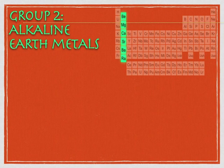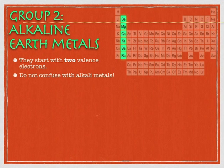Alkaline earth metals start with two valence electrons, and that means they are going to be less reactive than the alkali metals, because they have to lose two valence electrons rather than one. It's also very important to remember that the term 'alkaline earth metal' is different than the term 'alkali metal' — there is no such thing as an 'alkali earth metal' or an 'alkaline metal.' So just be careful about that terminology.